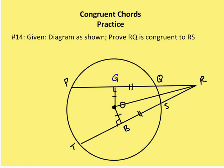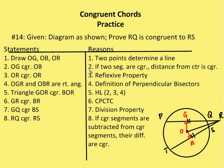Let's go through that in a two-column proof format. I'm going to draw segments OG, OB, and OR — the reason being that two points determine a line. Now I know that OG is congruent to OB, because if two chords are congruent, the distance from the center to those two chords is going to be congruent.